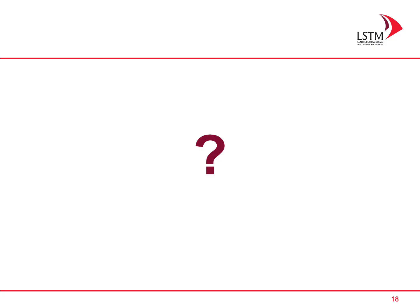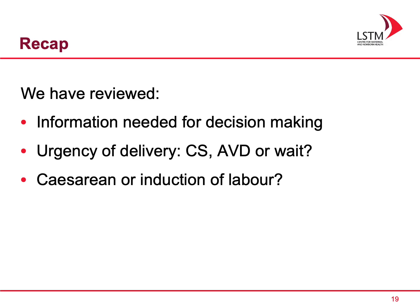In recap, we have reviewed the information needed for decision-making on the Labour Ward: the urgency of delivery, and whether delivery should be by caesarean section, assisted vaginal delivery, or — prior to labour — whether we should plan for induction. It is important to review, as things may change suddenly and you have to review decisions based on new information to ensure the best outcome for mother and baby. Thank you for listening.